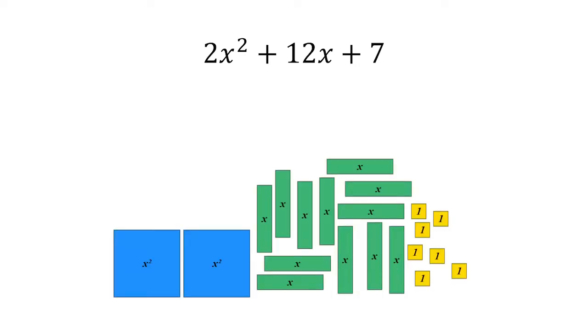We've given the kids a set of algebra tiles and asked them to form a model for a non-monic quadratic like 2x squared plus 12x plus 7. They take out two blue tiles, twelve green tiles, and seven yellow tiles. Then we ask them to form a square.